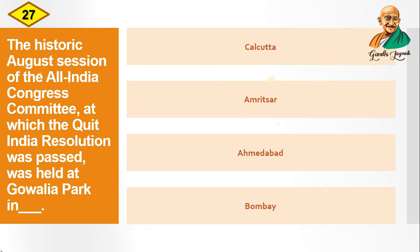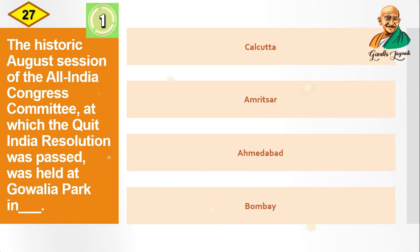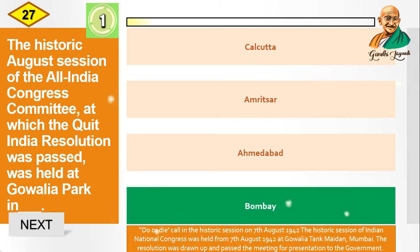Question: The historic August session of the All India Congress Committee at which the Quit India resolution was passed was held at Gowalia Tank in which city? Options are: Kolkata, Amritsar, Ahmedabad, Bombay. The correct answer is Bombay. The historic session of the Indian National Congress was held on 7th August 1942 at Gowalia Tank Maidan, Mumbai.